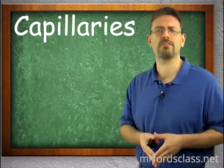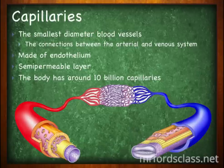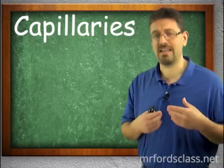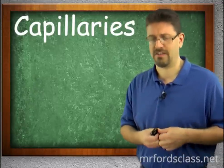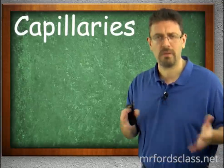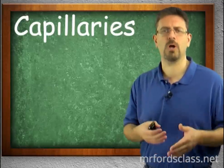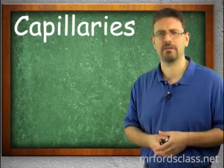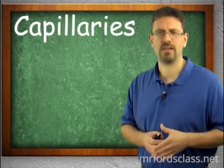The capillaries are where the magic happens. They are the smallest diameter of all the blood vessels, connecting the arterial system and the venous system together — that is where exchanges occur. They are made of endothelial cells, simple squamous epithelial tissue, forming a semi-permeable membrane, meaning some things can get in and out while others cannot. The body has around 10 million capillaries, and we will have a separate video specifically on capillaries.